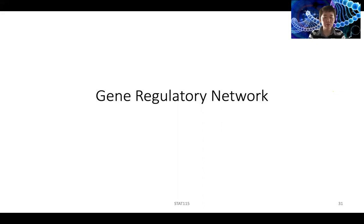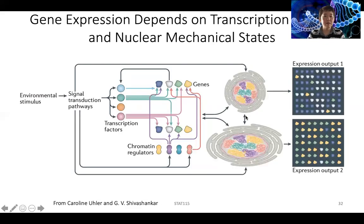So next we talk about gene regulatory network. Gene expression really depends on transcription factors and also the nuclear state as we mentioned. Depending on whether this region is open, the transcription factor might be able to bind to some of the transcription factor motifs but won't be able to bind to other transcription factor motifs if they are in a closed chromatin or compartment B regions.